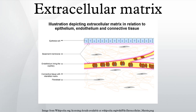Many cells bind to components of the extracellular matrix. Cell adhesion can occur in two ways: focal adhesions, connecting the ECM to actin filaments of the cell, and hemidesmosomes, connecting the ECM to intermediate filaments such as keratin. This cell to ECM adhesion is regulated by specific cell surface cellular adhesion molecules known as integrins.